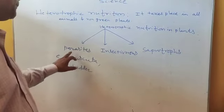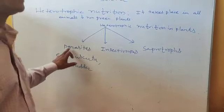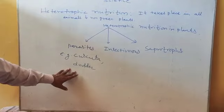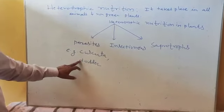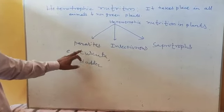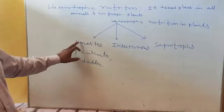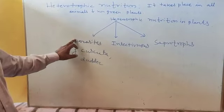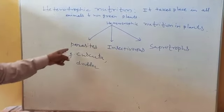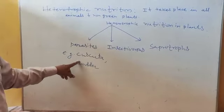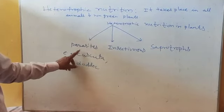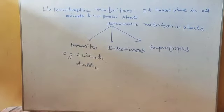The example of a parasitic plant is cuscuta, also called dodder. It is a non-green plant and takes food and shelter from a green plant. The green plant is called the host plant, and cuscuta or dodder is called the parasitic plant.